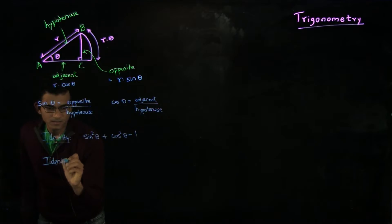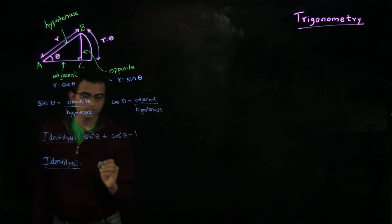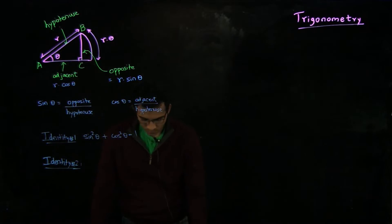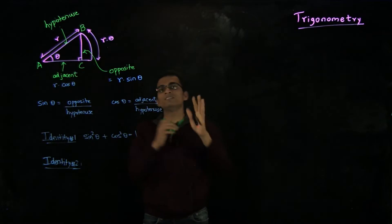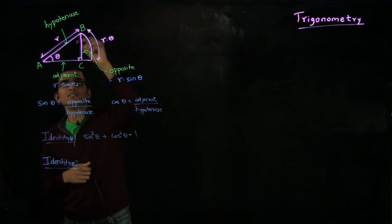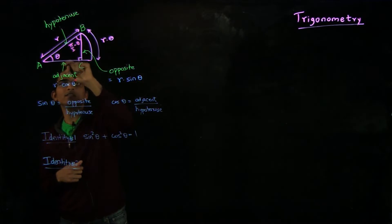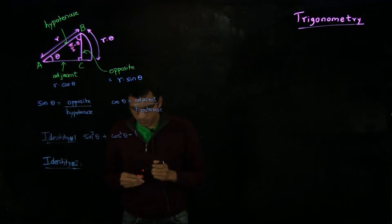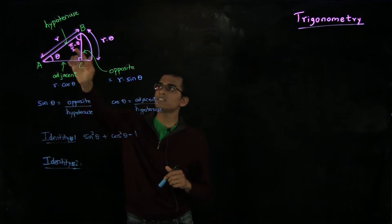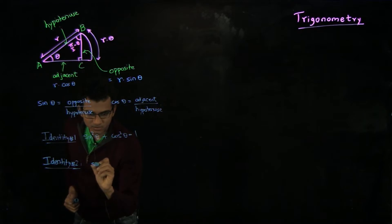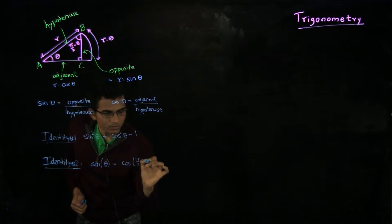Another very easy identity, which you can immediately see, is that if this angle is theta, then since the sum of angles of a triangle add up to 180 degrees — and remember that 180 degrees is just Pi — this third angle is Pi over 2 minus theta. So the side that is opposite to theta is adjacent to Pi over 2 minus theta, and you can immediately conclude that sin of theta is simply cos of Pi over 2 minus theta.